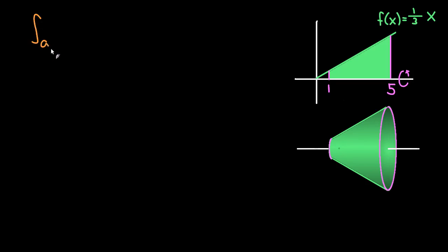The formula is the integral from a to b of π r(x) squared dx. This is the disk method formula for when you're rotating around the x-axis.